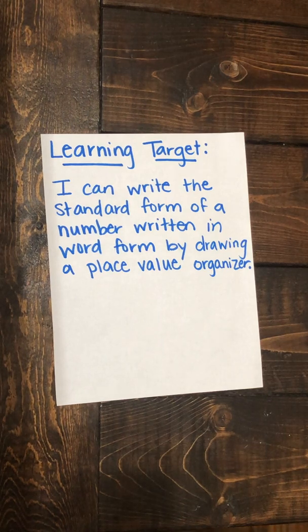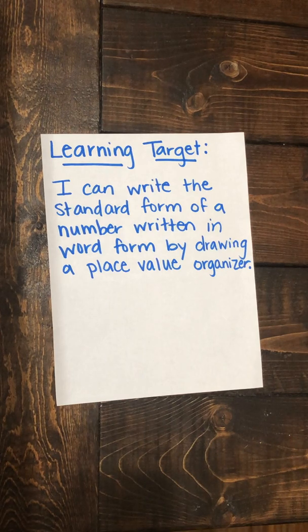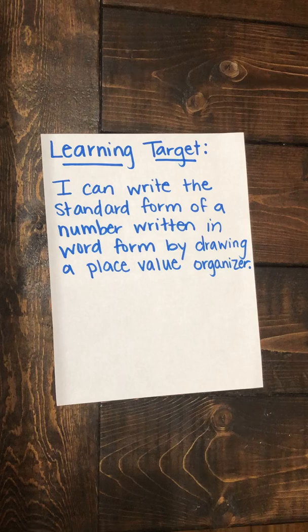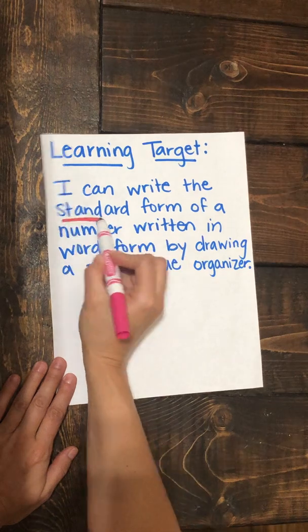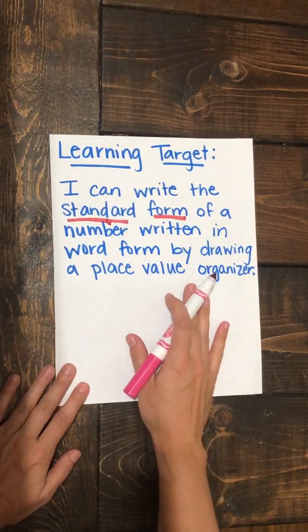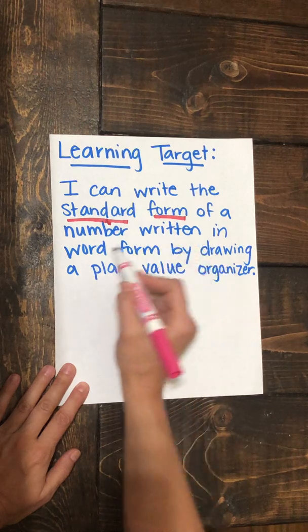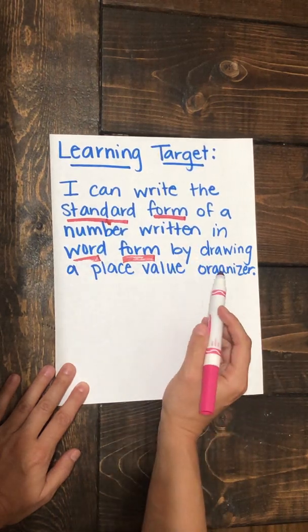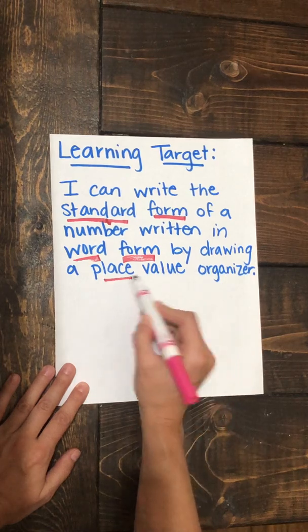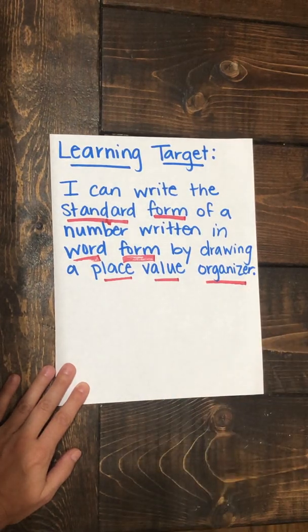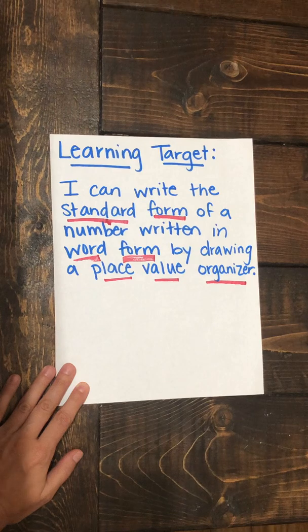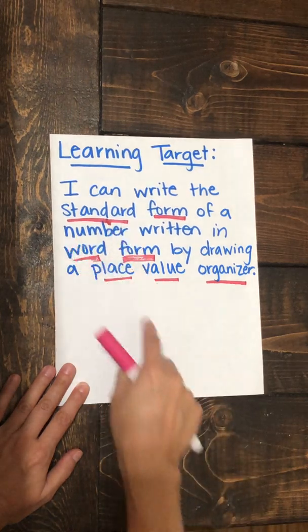Let's look at our learning target for today. It says: I can write the standard form of a number written in word form by drawing a place value organizer. So we're asked to write the standard form of the number, and it's going to be written in word form. We're going to do this by drawing a place value organizer, and you're going to have to be able to draw this organizer on your own — it won't be provided for you. So we're going to change word form to standard form.